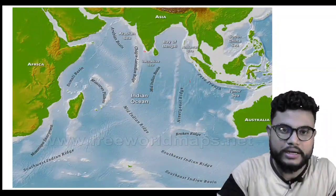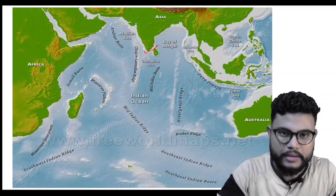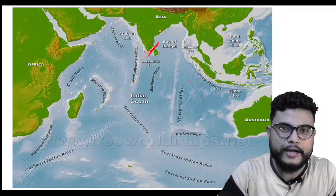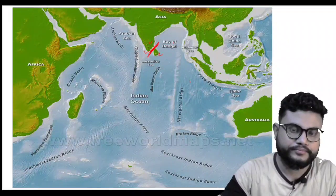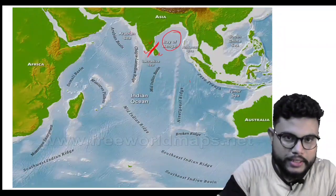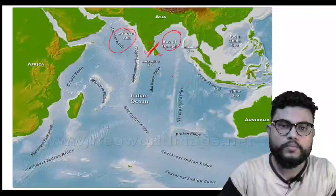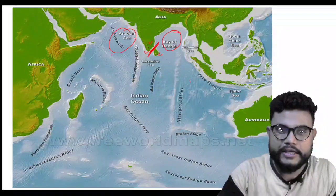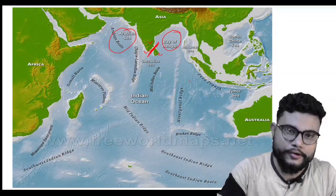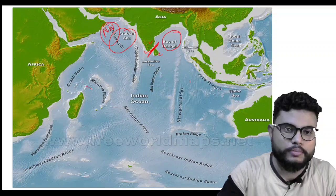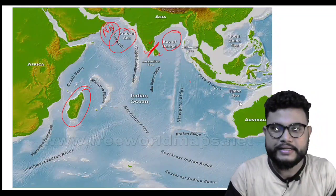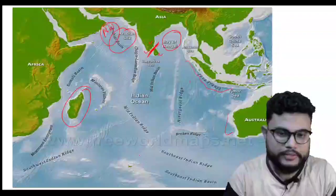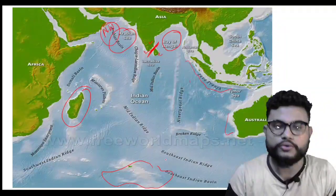Here is our beloved India. To the north of the Indian Ocean is India. To the northeast is the Bay of Bengal, and to the northwest is the Arabian Sea. To the west is Madagascar Island and then Africa. To the east is Indonesia. Then to the south is Australia, and further south is the Southern Ocean.